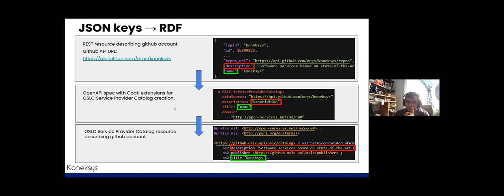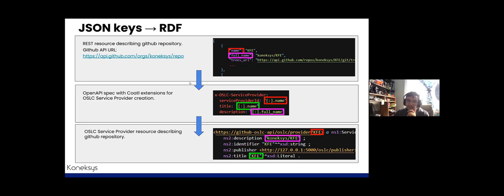We can also check the creation of OSLC service provider resources. The REST resource provides information about each repository of the user. In order to gather the keys of each JSON object, the JaQL queries are specified in the OpenAPI specification, as shown in the middle picture. This takes the title, description, and identifiers of each OSLC service provider to be generated, and finally produces the resource mapped into properties of an OSLC service provider.